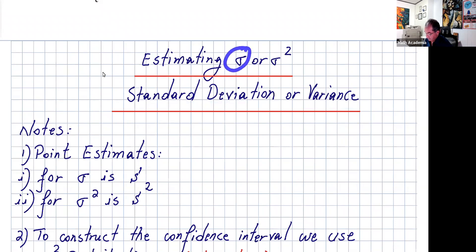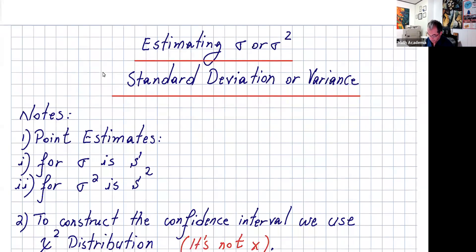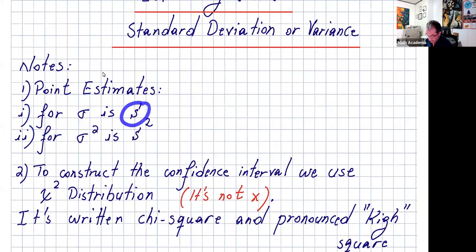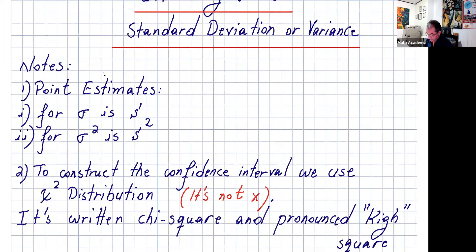Standard deviation is sigma and variance is sigma squared. For the point estimates: for sigma, the point estimate is s — that means for population standard deviation, the point estimate is the sample standard deviation. And for sigma squared, which is the variance, the point estimate is s squared, which is the sample variance.